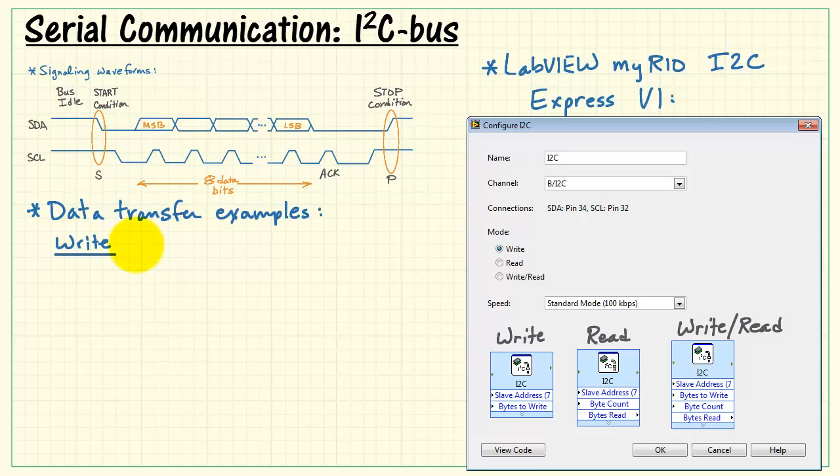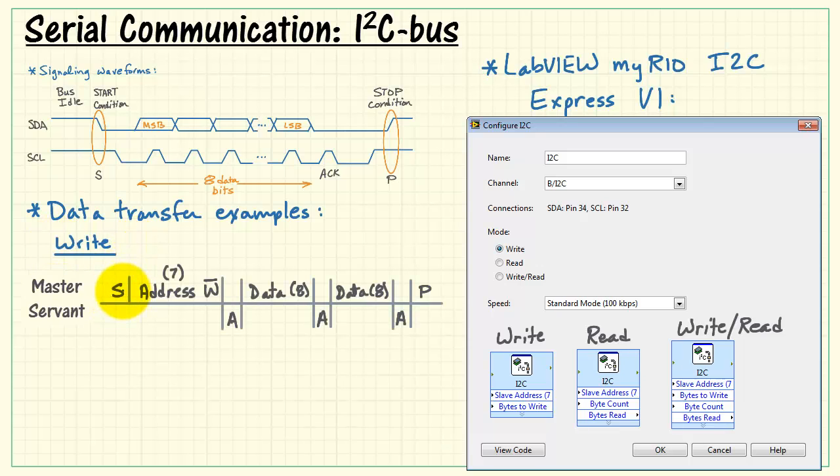Let's take a look at three data transfer examples based on these three possible modes. We can begin with a start condition and then generate a 7-bit address followed by a read-write bit. If that bit is high, it's a read operation. If it's low, we're doing a write operation. Note that we're always doing an 8-bit transfer.